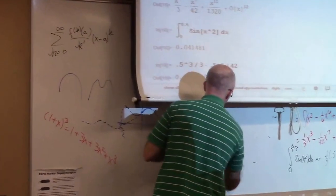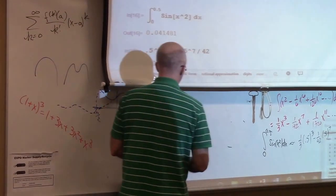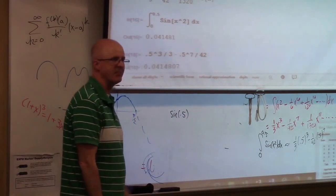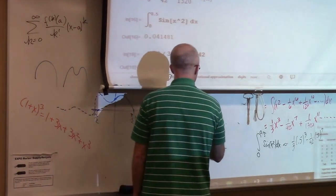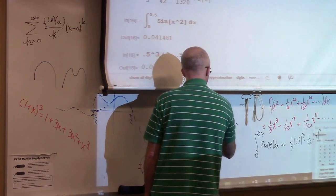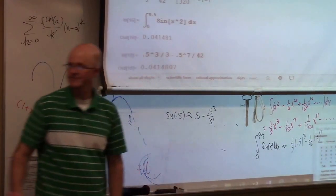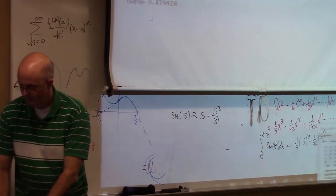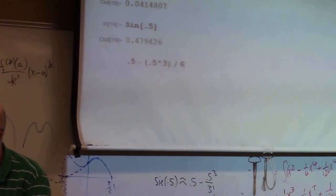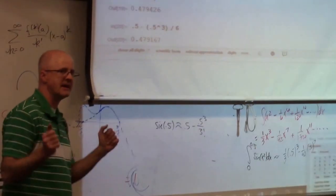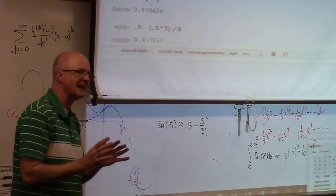Let's take a simpler example: what is sine of 0.5 approximately? According to the Taylor series for sine truncated to cubic power, it's approximately 0.5 minus 0.5 cubed over three factorial. Sine of 0.5 is about 0.479426. The approximation 0.5 minus 0.5 cubed over six is pretty close. In the age of technology it may seem unnecessary, but it's still a good idea to learn these approximations.